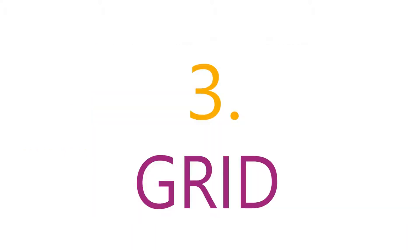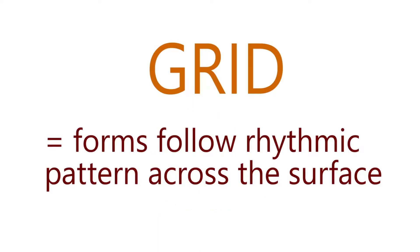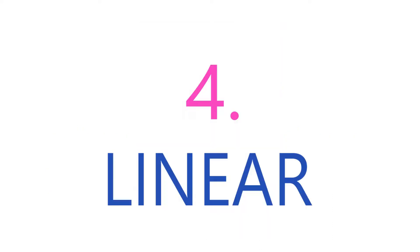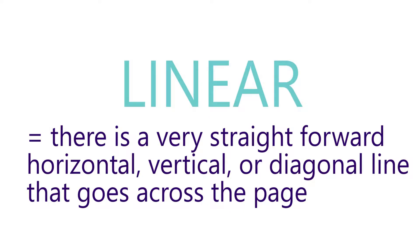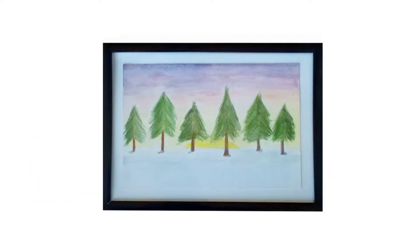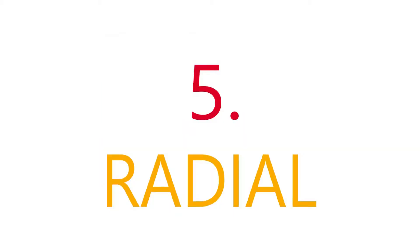Third are grid compositions. In a grid composition, forms follow a rhythmic pattern across the surface. Fourth are linear compositions. In a linear composition, there is a very straightforward horizontal, vertical, or diagonal line that goes across the page.